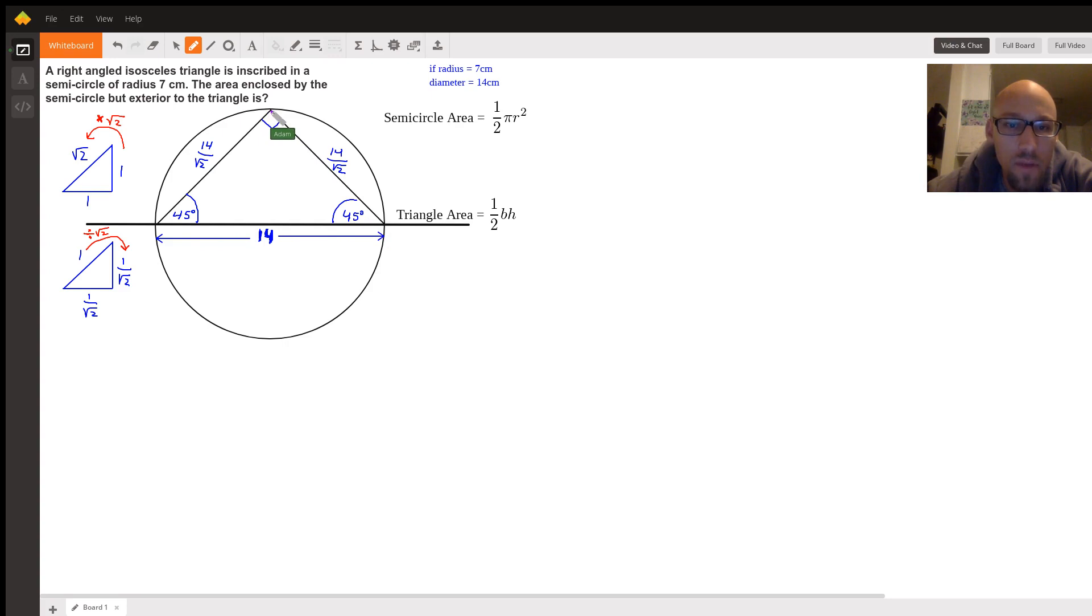You may be asking, how do you know this is a 45-45-90? Well, inscribed angles are always one-half of the intercepted arc, and obviously this intercepted arc here is 180 degrees because it's a semicircle. So half of 180 is 90, so this is a... oh, they told us it's a right angle.